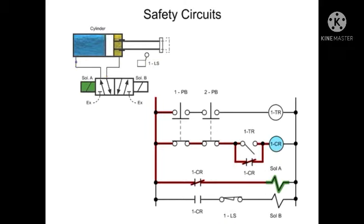At this point in the cycle, the cylinder will remain extended indefinitely until at least one push button is released. If one push button is released, the control relay will lose power, which causes 1CR to remove power from solenoid A and connect power to solenoid B.